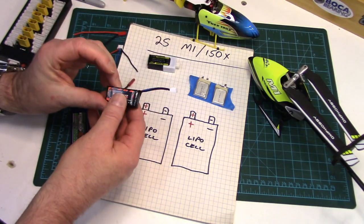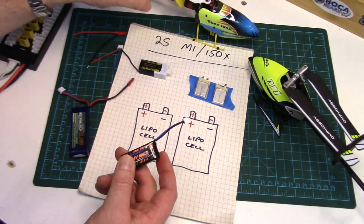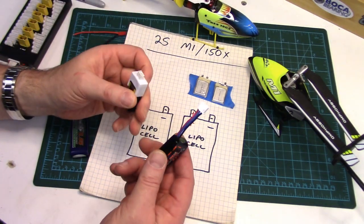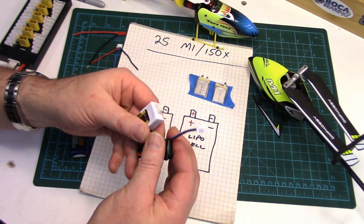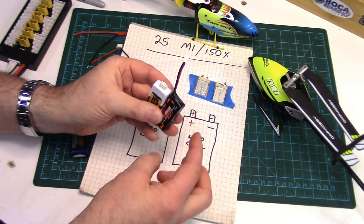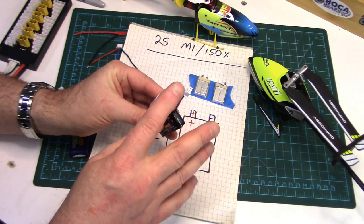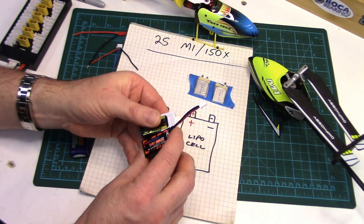The thing that makes these packs somewhat unique, same with the T-Rex 150X, they only have a 3-pin JST-XH balance plug on them. So the plug serves dual purpose, you're balancing and charging through the plug.